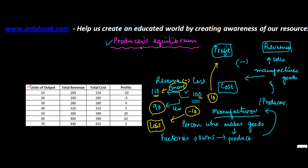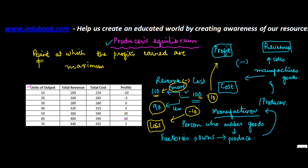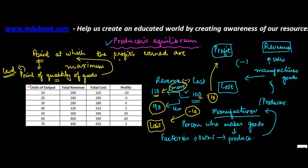Producer's equilibrium basically refers to the point — the level of quantity — at which the profits earned are maximum. So producer's equilibrium is the level of quantity of goods at which the profits earned are maximum.